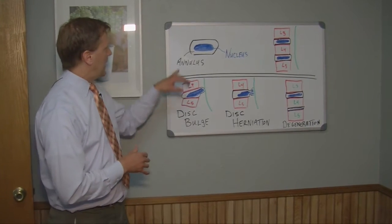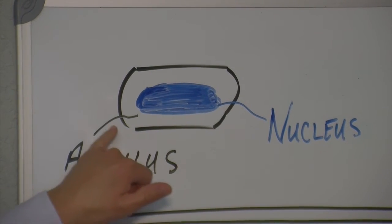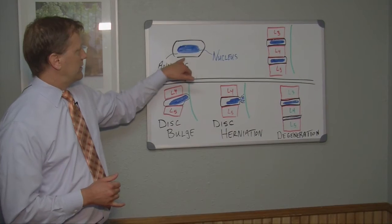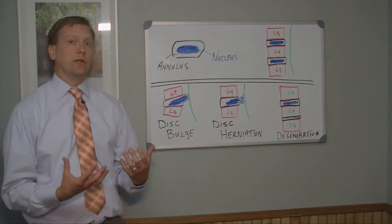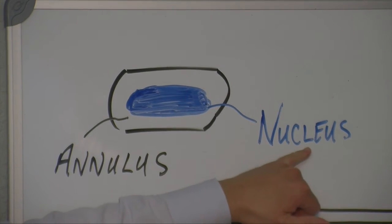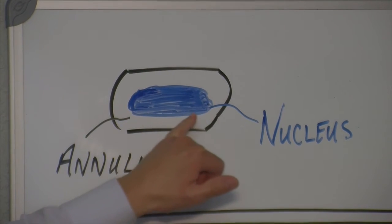The outside of the disc is called the annulus. That outer part of the disc protects the fluid on the inside of the disc, which is called our nucleus. The nucleus is the fluid; the annulus protects the nucleus.